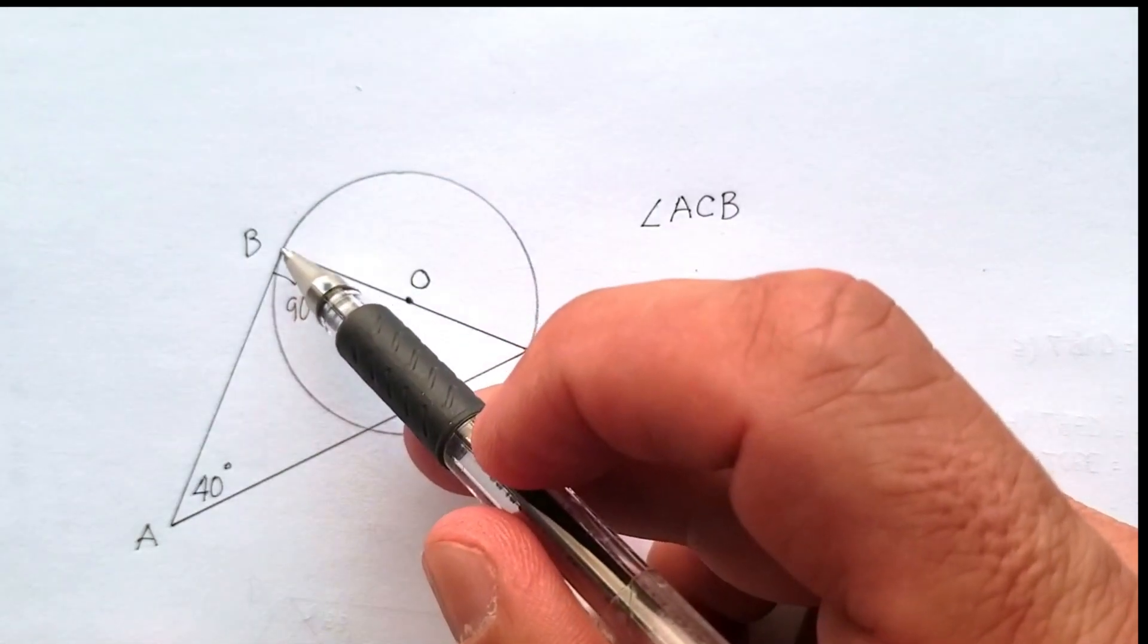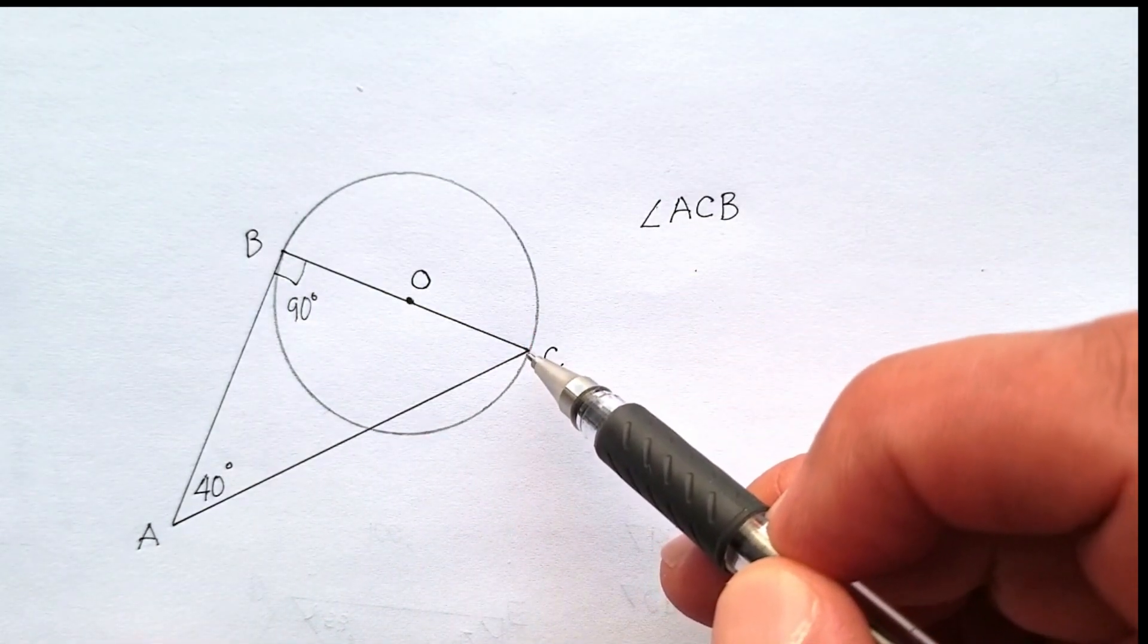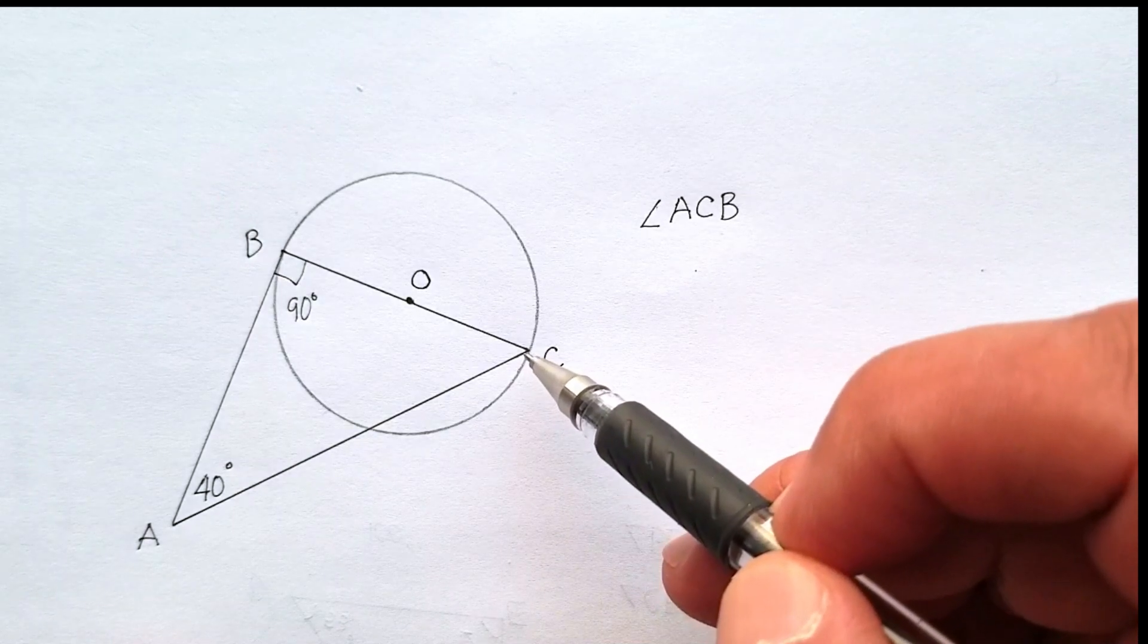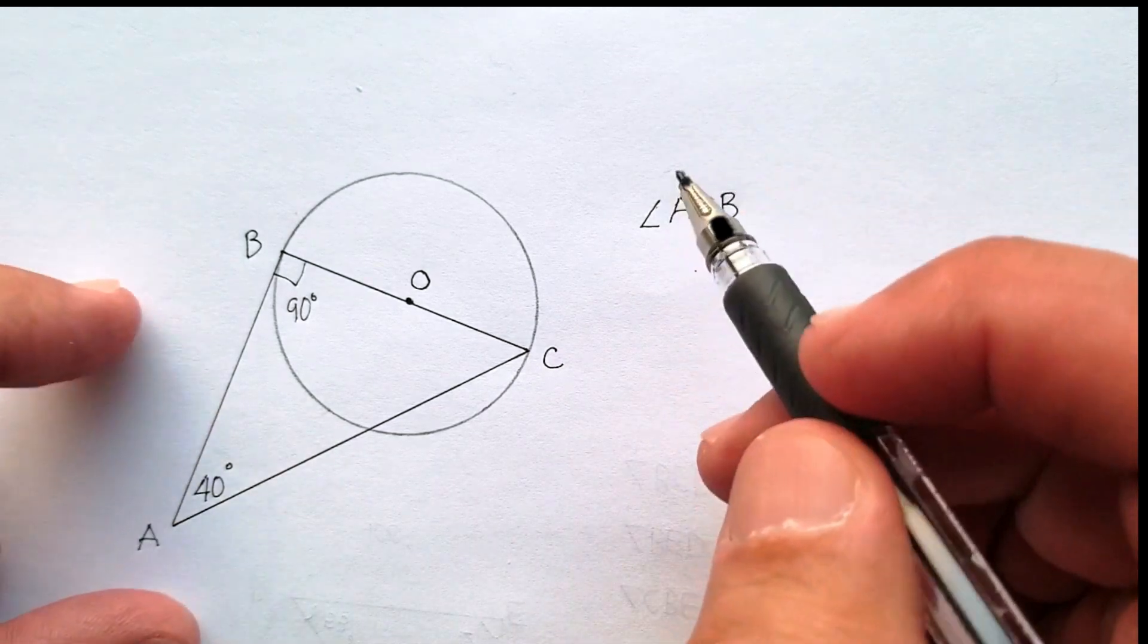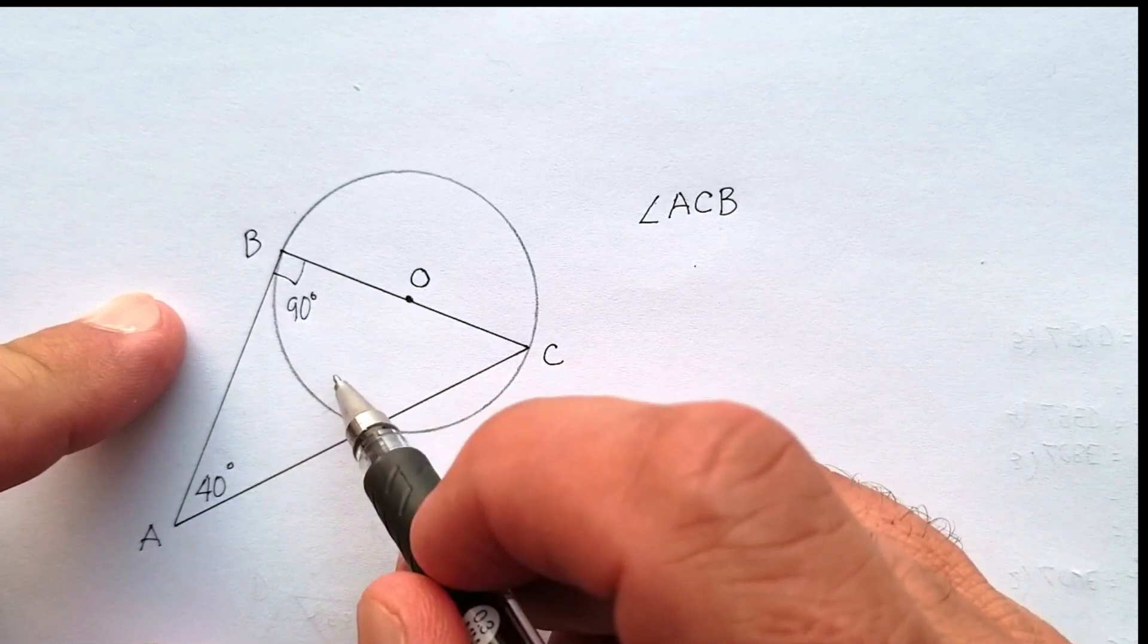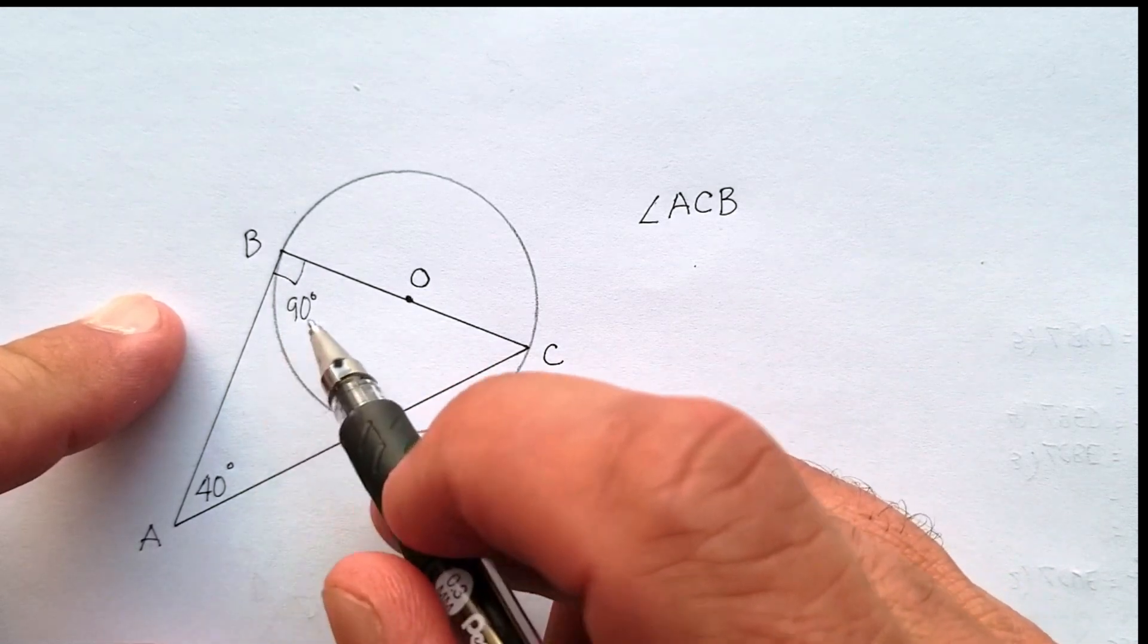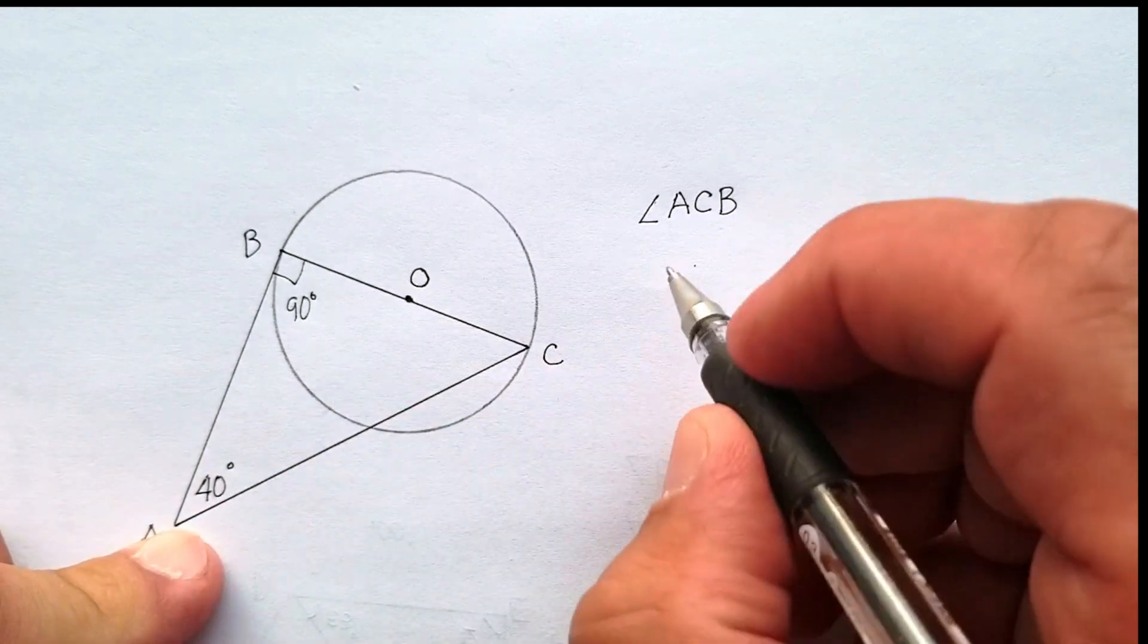And it looks like this line is a diameter, which goes all the way through to here. Okay? Now if this is true, then we also have another right triangle. But that's not going to necessarily help us. What we're going to use, we're going to use the information that any, the internal interior angles of any triangle equals 180 degrees.